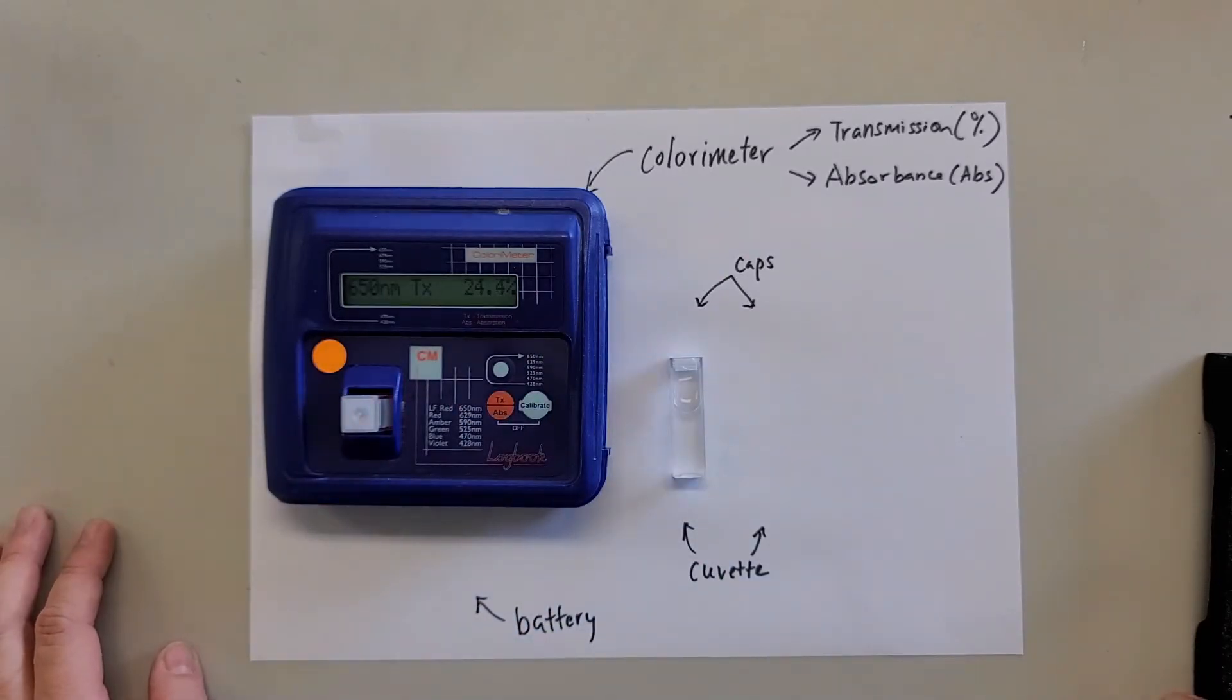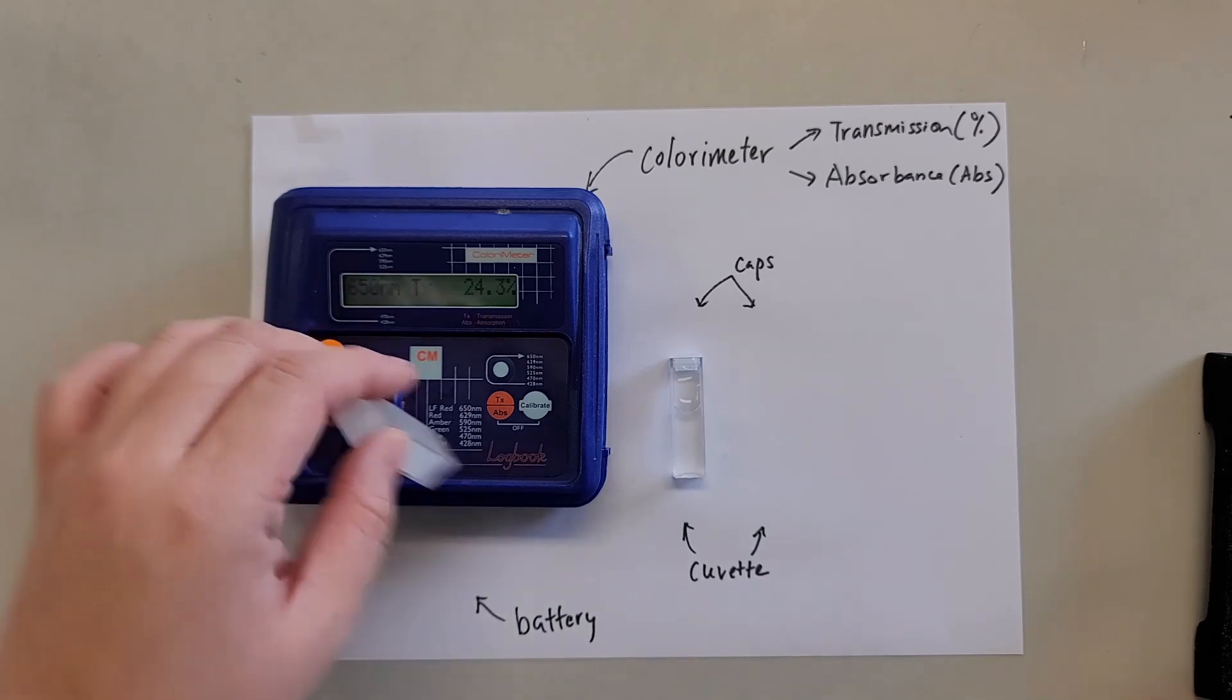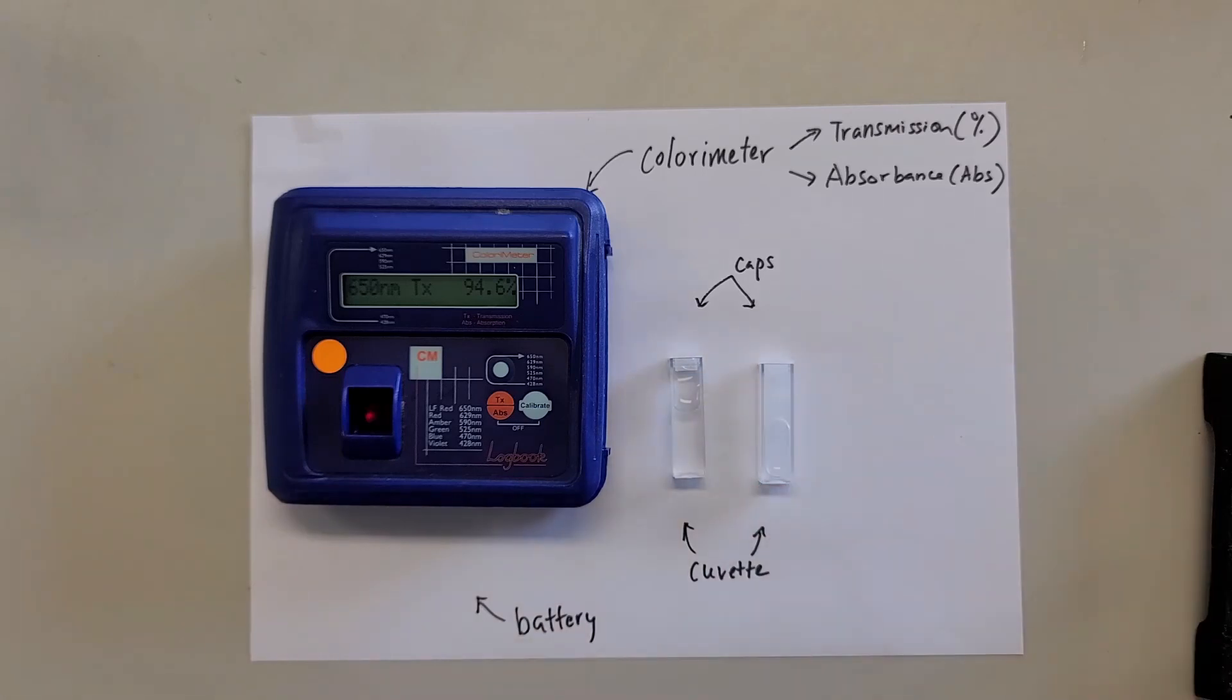Now after one day, the transmittance drops until 24.5. So that's how you can measure the microbial growth using the transmission method. I hope this video helps you in understanding how the colorimeter works. So that's it for today. Thank you and bye for now.